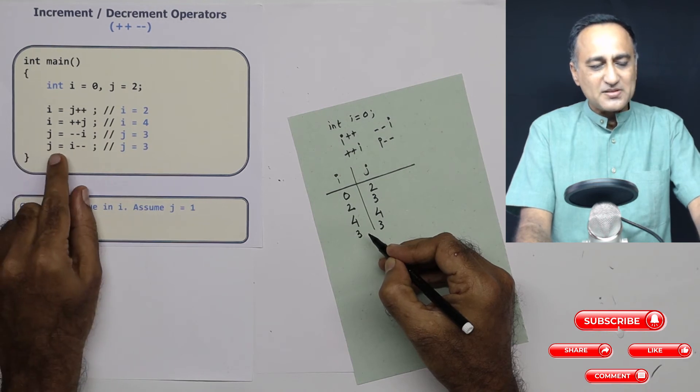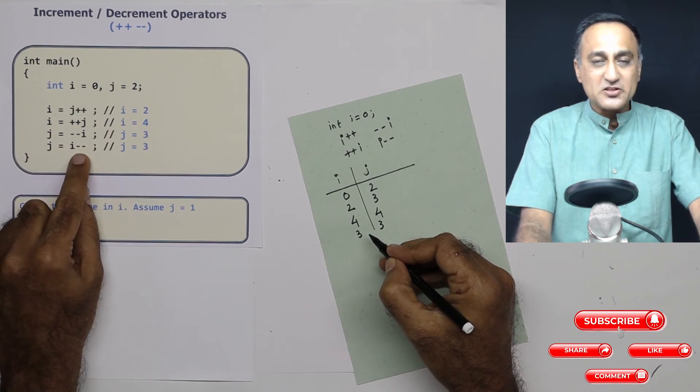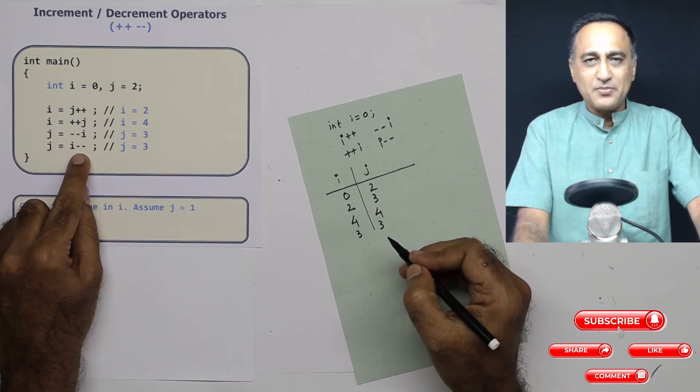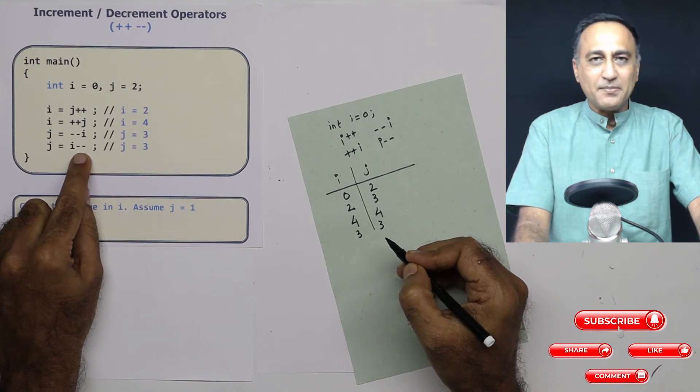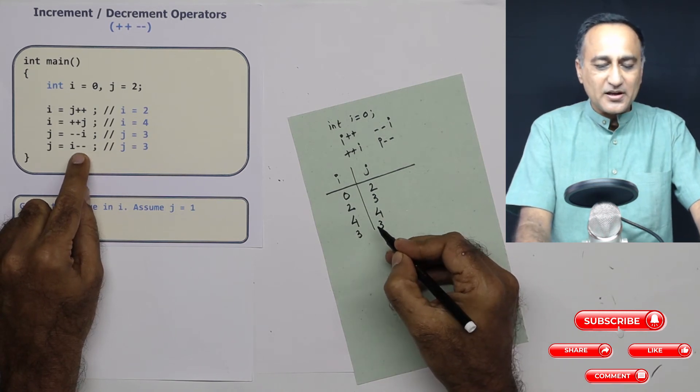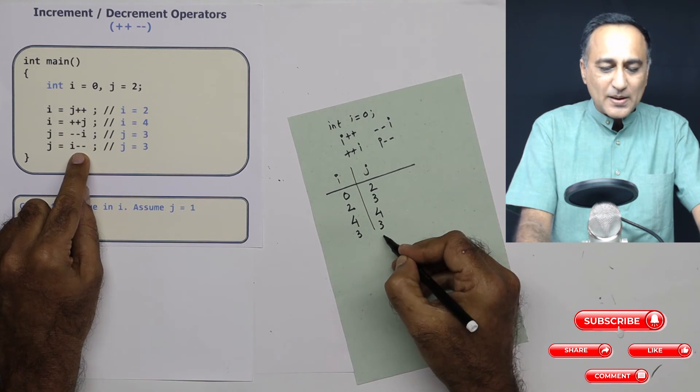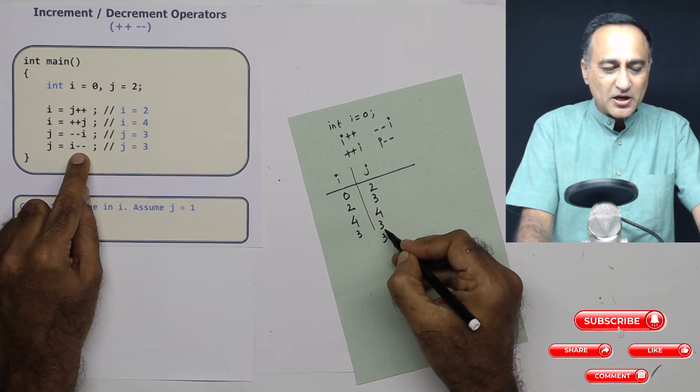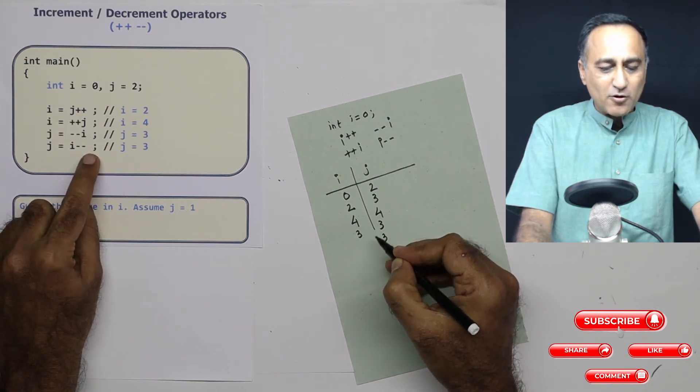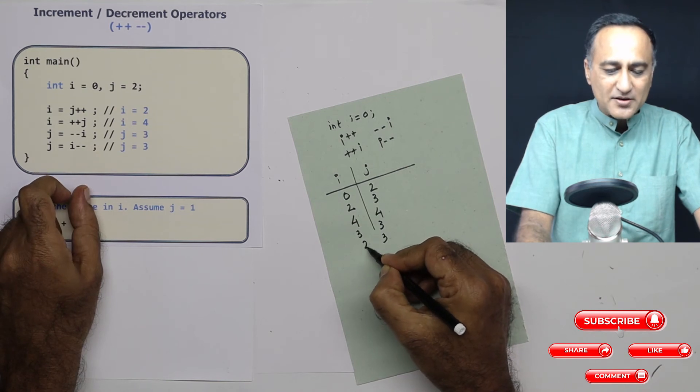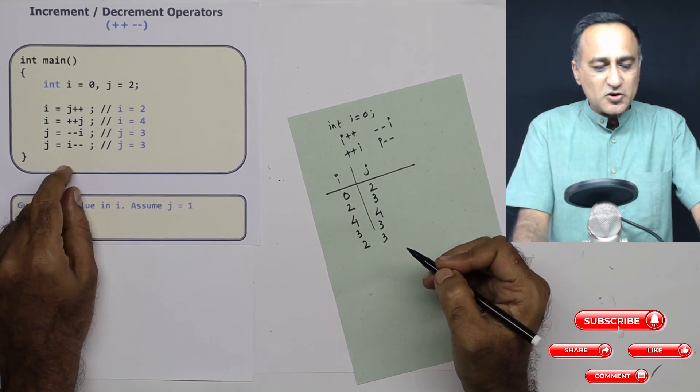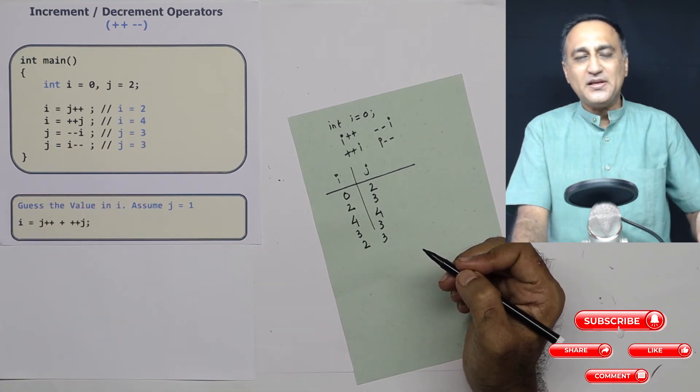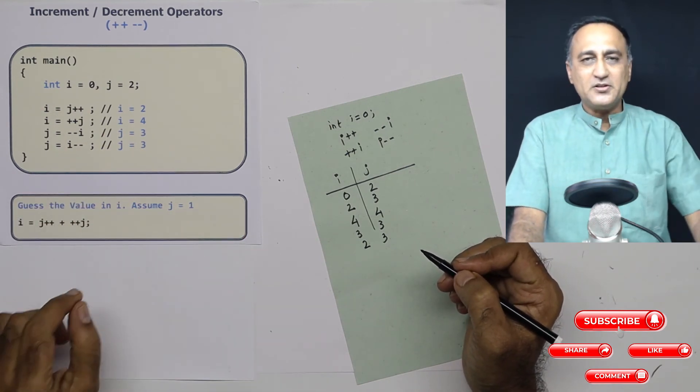In the following step, j is assigned i--. This is a postfix decrement. Because it's postfix, the original value of i, which is 3, is given to j. After the semicolon, i gets reduced by 1 and becomes 2. This should give you a good idea of how increment and decrement operators work.